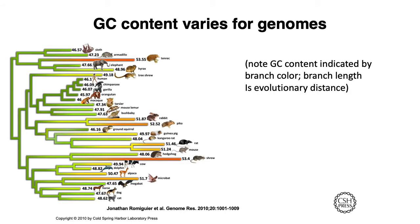GC content can vary pretty widely across different genomes. Here's a phylogenetic tree with different organisms indicating the relative percent GC content of different genomes. The variation may not look that big — some organisms like the shrew are at 53.4% compared to orangutans at just under 46% — but given the size of these genomes, a difference of 7% in GC content is actually pretty significant.